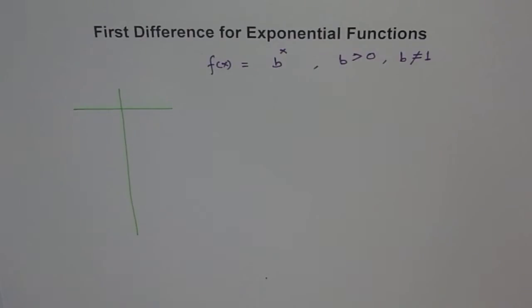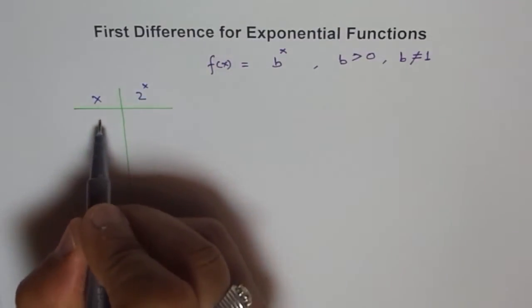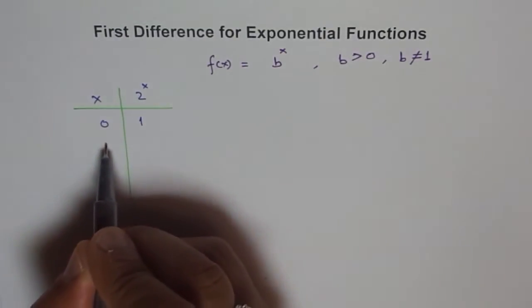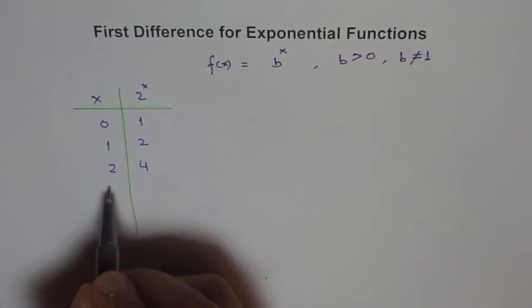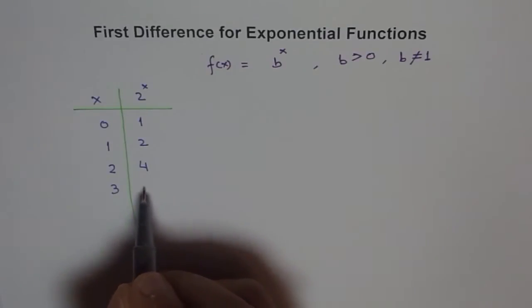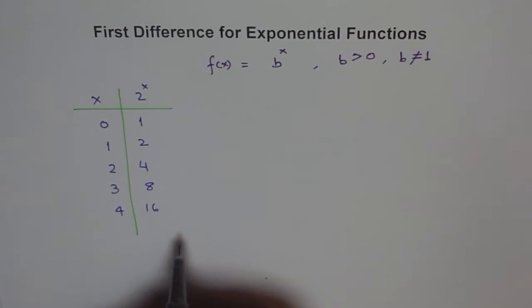Now let's see what happens with exponential functions. Take f(x) = 2^x. For x = 0: 2^0 = 1. For x = 1: 2^1 = 2. For x = 2: 2^2 = 4. For x = 3: 2^3 = 2×2×2 = 8. For x = 4: 2^4 = 8×2 = 16.